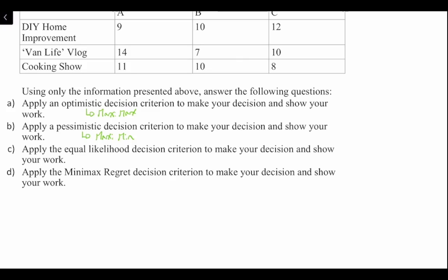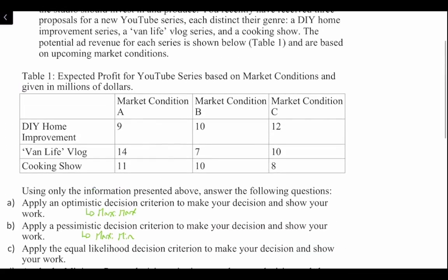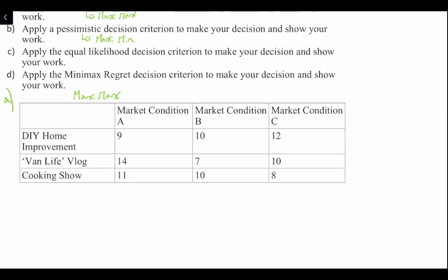Let's start with Question A — the maxi-max decision criterion. We need to identify the maximum payoff in each row and then select the alternative that has the highest of the maximums. For each specific genre we are going to select the maximum payoff, and remember that this table is in expected profit in millions of dollars, so we're looking for the highest number.